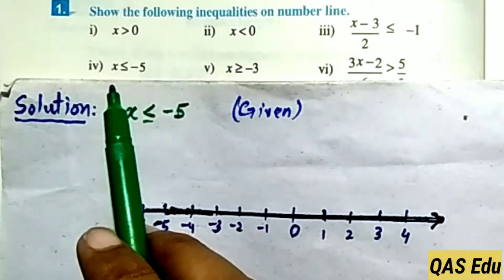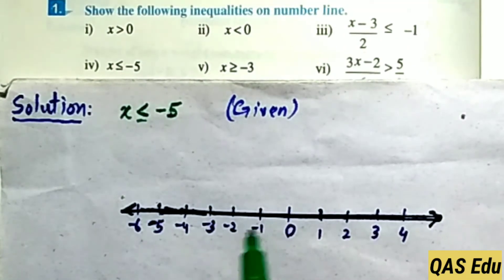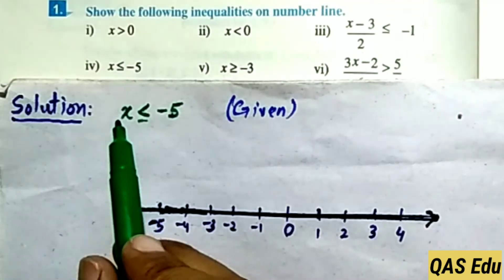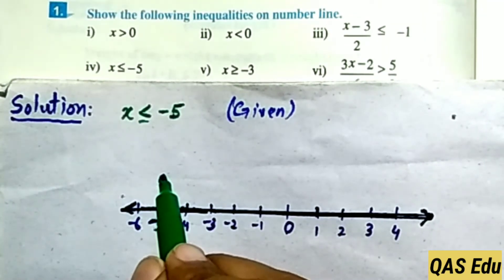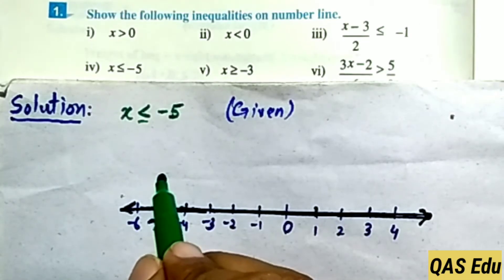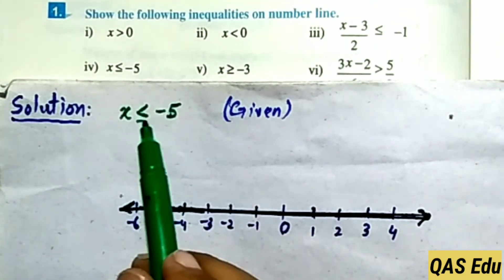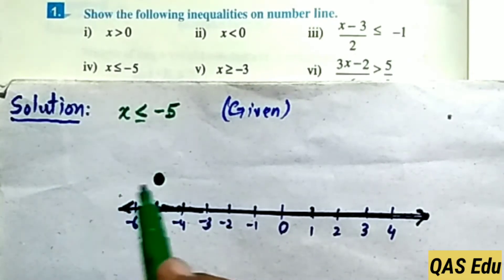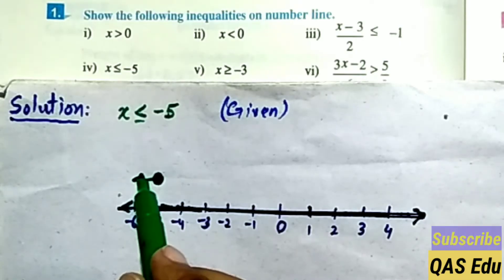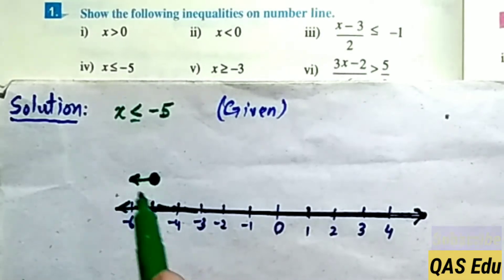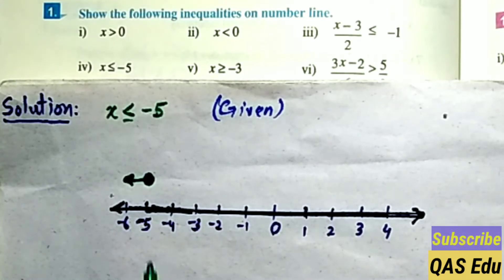Part 4: x is less than or equal to minus 5. Draw the number line, then since x equals minus 5 is included, draw a filled (shaded) circle at minus 5. Since x is less than minus 5, mark values like minus 6, minus 7 and draw an arrow pointing in that direction.